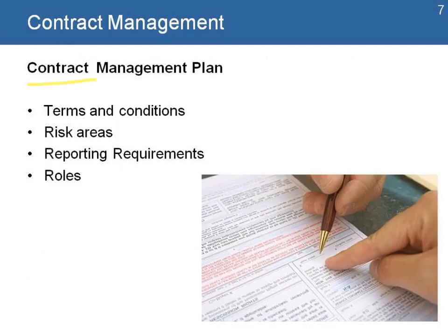The contract management plan looks at elements like terms and conditions, identifies any risk areas that we might have in the project and the contract. This is also where we look at reporting requirements and make sure that we have clarification on the different roles that are needed to manage the contract.